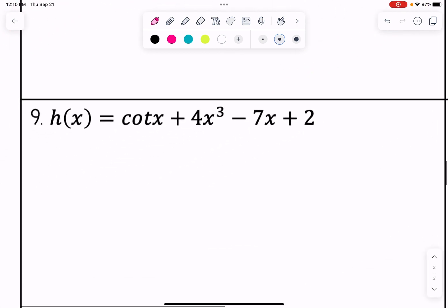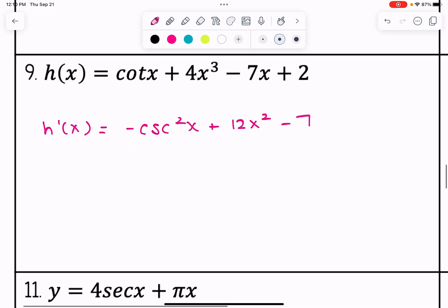Number nine, the derivative of cotangent x plus 4x cubed minus 7x plus 2. Well, the derivative of cotangent x is negative cosecant squared x. And I can find the remaining derivatives by using the power rule. Keep in mind that the derivative of 2 is just 0 since 2 is a constant.